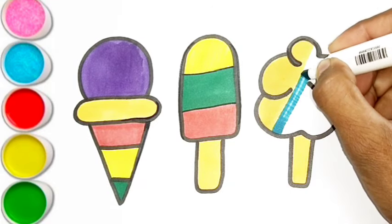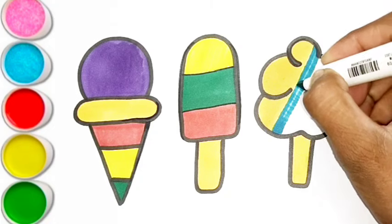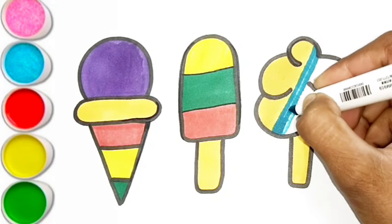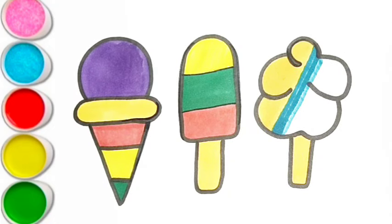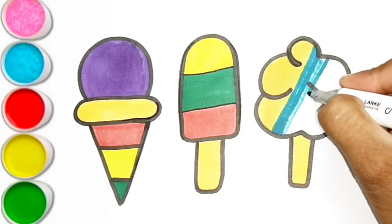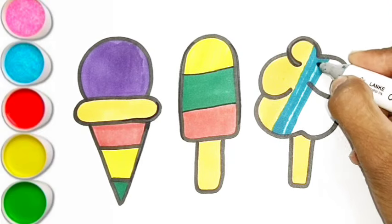I is for igloo. I, i, igloo. J is for jump. J, j, jump. K is for kangaroo. K, k, kangaroo.